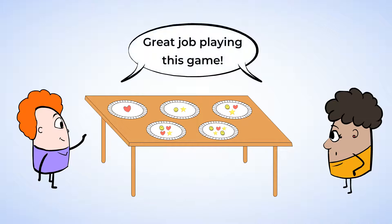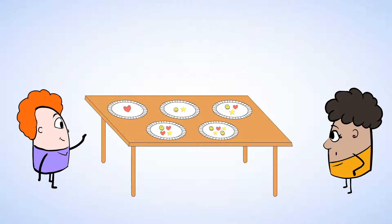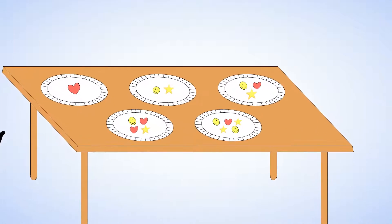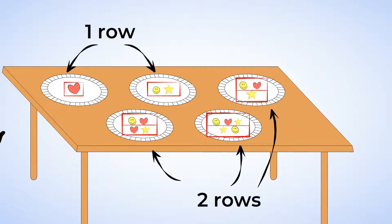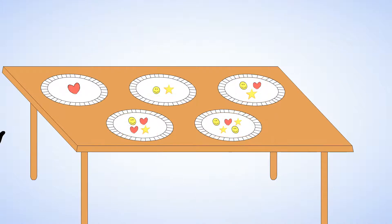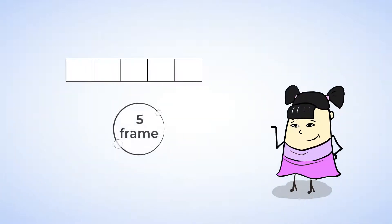Great job playing this game. The way the dots are organized makes it easier to see how many there are. The stickers on the plates had one or two rows of dots to help us see the number. Another tool that can help us see the number faster is a five frame. If we know the five frame is full, then there are definitely five dots.